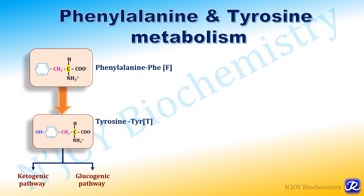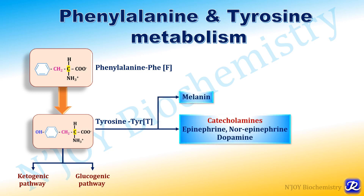In today's video, we have seen that tyrosine is an aromatic amino acid formed from phenylalanine, and it is a substrate for various specialized compounds — melanin, catecholamines, epinephrine, dopamine, as well as thyroid hormones. I hope this video will be useful to you. Thank you for watching and happy learning.